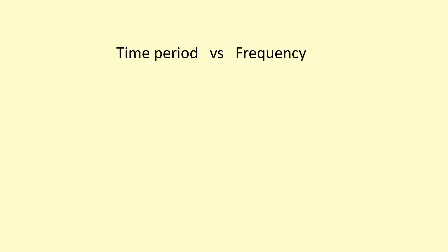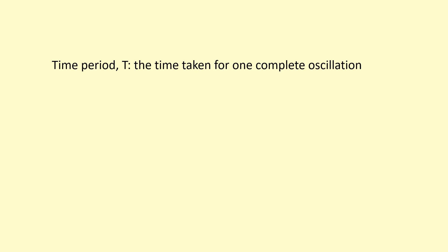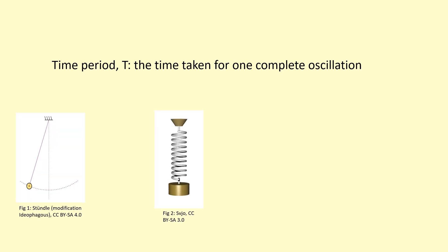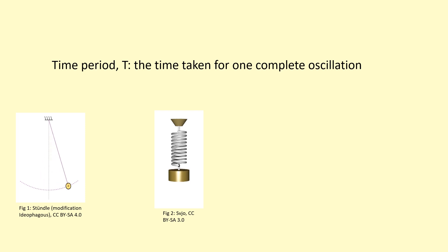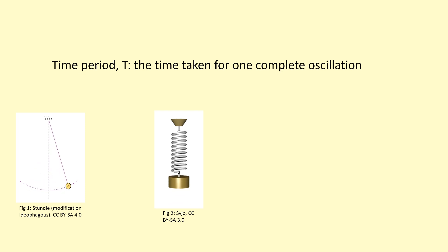Time period and frequency are two quantities that we can use to describe waves. Time period is the time taken for one complete oscillation. It doesn't even have to describe a wave — it can be anything that's oscillating, for example a pendulum or a mass on a spring bobbing up and down.